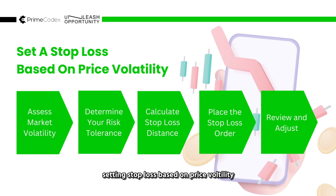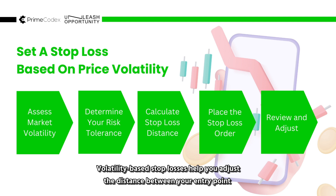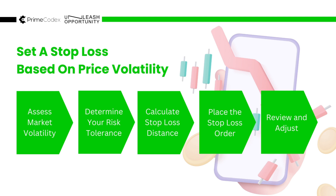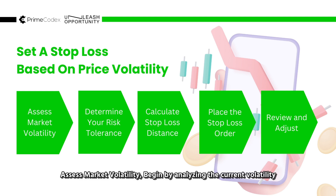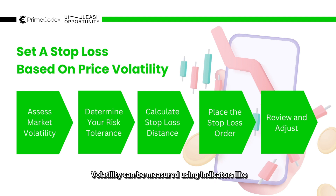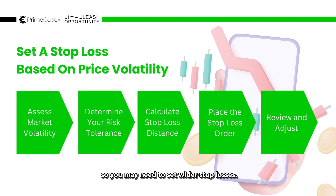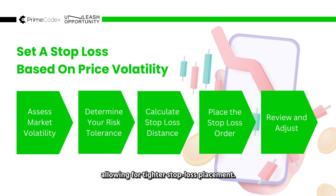Setting a stop loss based on price volatility. Setting stop loss based on price volatility is a crucial aspect of risk management in forex trading. Volatility-based stop losses help you adjust the distance between your entry point and your stop loss level according to current market conditions. Begin by assessing market volatility — this can be measured using indicators like the Average True Range (ATR) or by observing recent price movements. High volatility implies larger price swings, so you may need to set wider stop losses. Low volatility suggests smaller price movements, allowing for tighter stop loss placements.